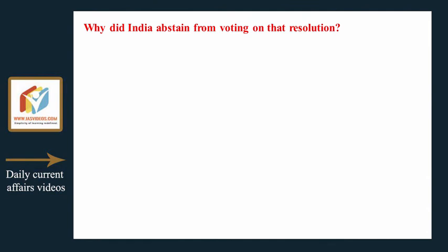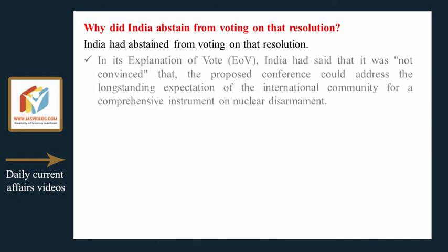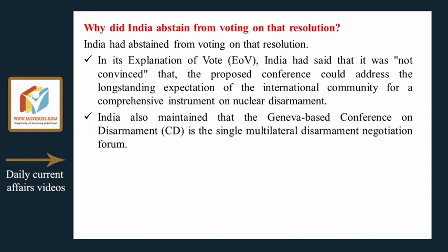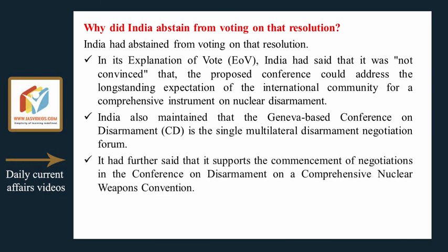Why did India abstain from voting on that resolution? India had abstained from voting. In its explanation of vote, India said it was not convinced that the proposed conference could address the long-standing expectation of the international community for a comprehensive instrument on nuclear disarmament. India also maintained that the Geneva-based Conference on Disarmament is the single multilateral disarmament negotiation forum, and that it supports the commencement of negotiations there on a Comprehensive Nuclear Weapons Convention.